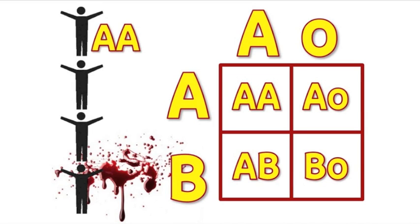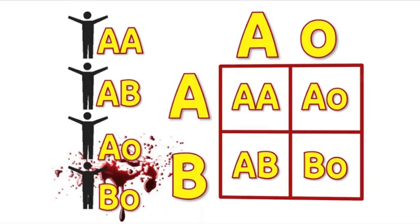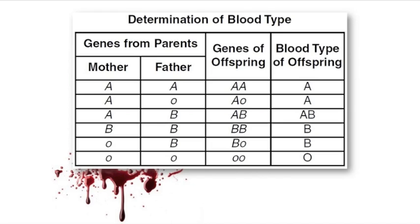So the four possibilities could be: AA; blood type AB with a dominant A and a dominant B; blood type A with a dominant A paired with a recessive O; and the last possibility would be blood type B, a dominant B with a recessive O. Take a look at the chart to review the determination of blood types.